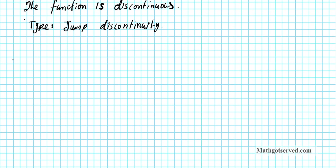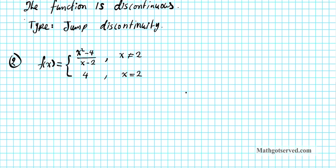Let's look at example 2. We have the piecewise defined function f(x) = (x² - 4)/(x - 2) when x ≠ 2, and f(x) = 4 when x = 2. We're going to apply the continuity test to see if it's continuous. Remember, it has to pass all three tests for us to conclude that the function is continuous.